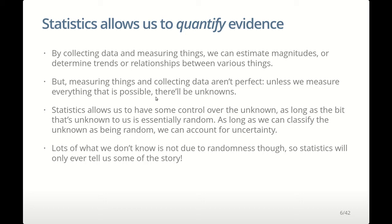Statistics only allows us to quantify the purely random part. It doesn't allow us to quantify the part that's not random. It allows us to characterize the uncertainty due to randomness, but it doesn't allow us to control the systematic bias, which is not a random process.